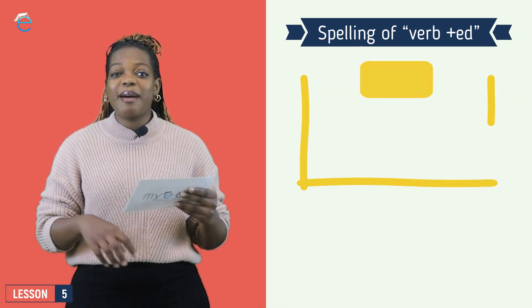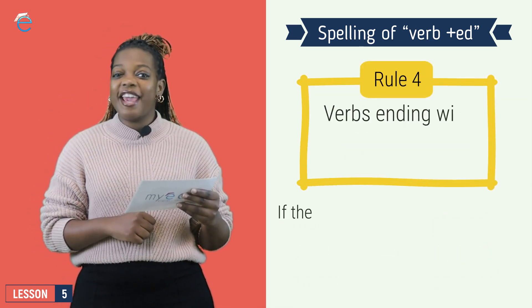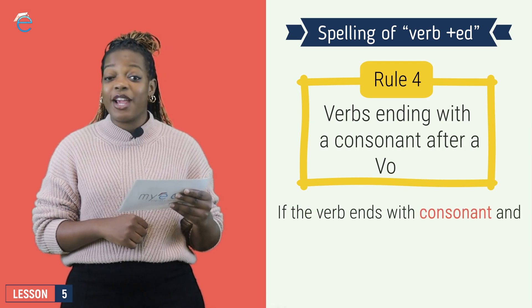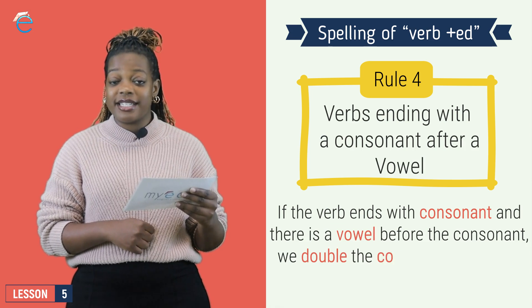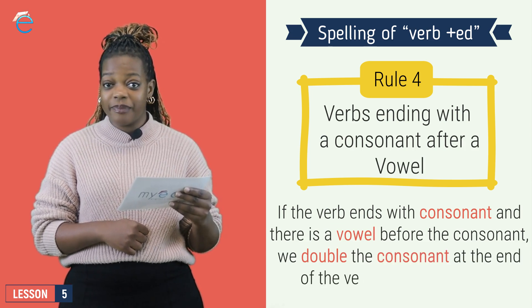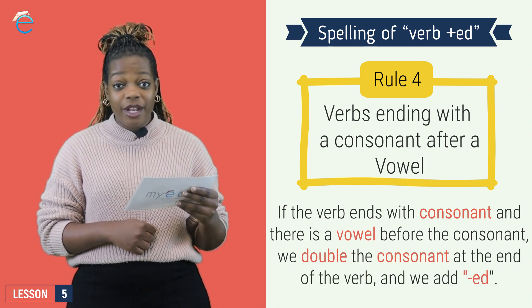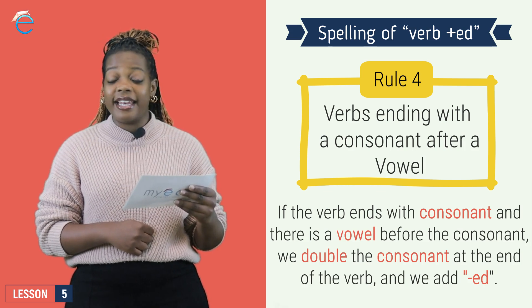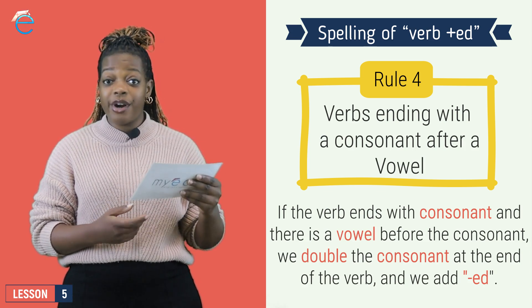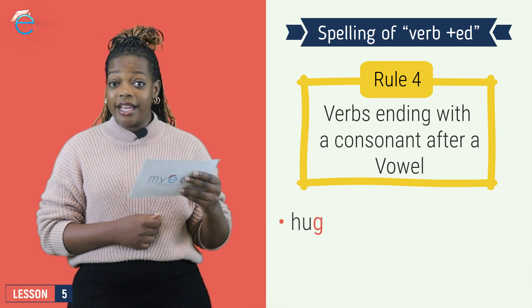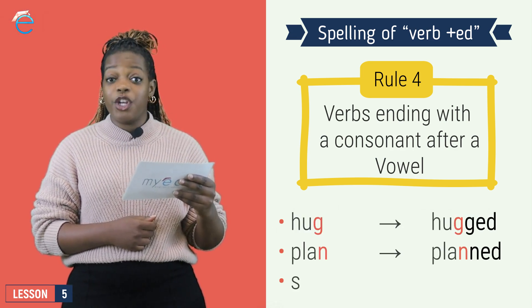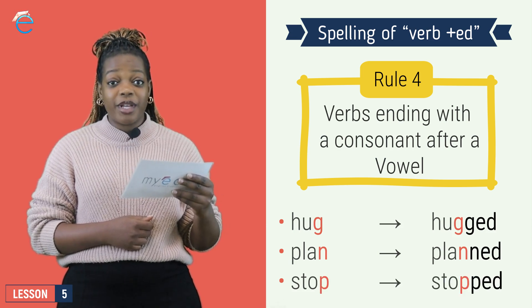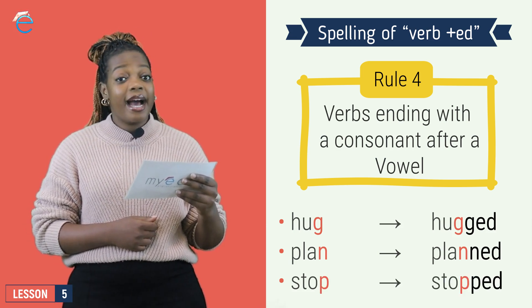Rule number four. If my word ends in a consonant, and before my consonant I have a vowel, then I double the last letter and add ED. For example, hug, G is a consonant, and U is a vowel. So it becomes hugged.